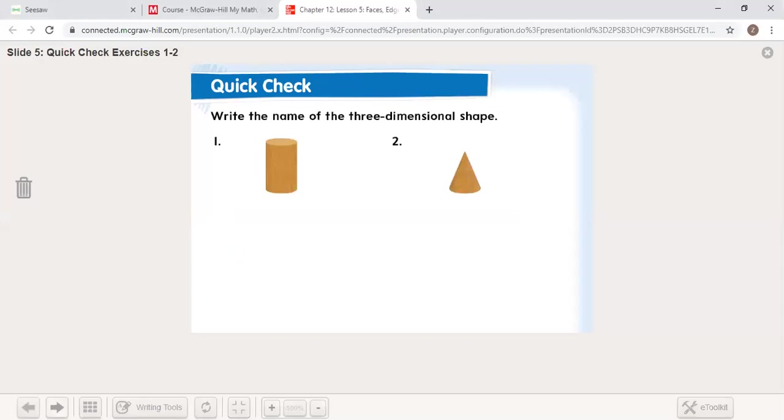All right, number one, name the shape. Name that 3D shape. Number two, name that 3D shape. You said for number one that is a cylinder and number two, that is a cone. You are correct. Good job.